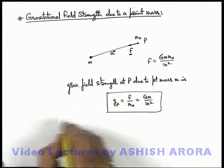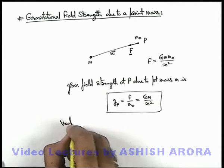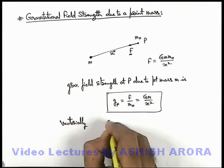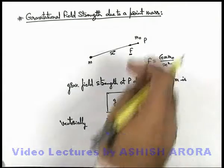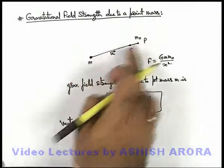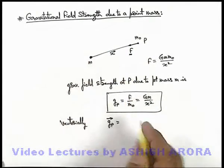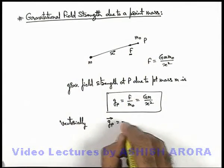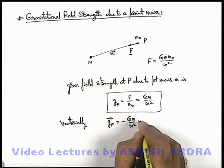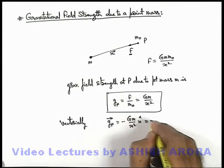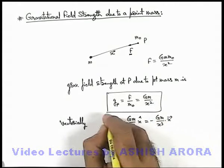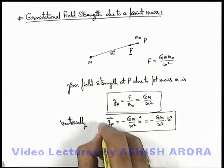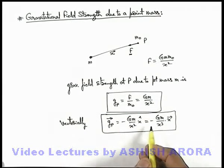If we wish to write it down vectorially, then the vector G_P is equal to — as the direction of force is towards the point mass m, it is exactly opposite to the vector x. So it can be written as negative of G·m divided by x squared times x-hat, or it can be written as negative of G·m divided by x cubed into the vector x. This is how we can write vectorially the gravitational field at a point in the surrounding of the point mass m.